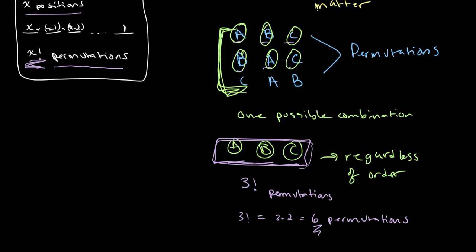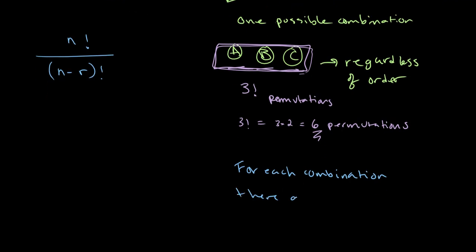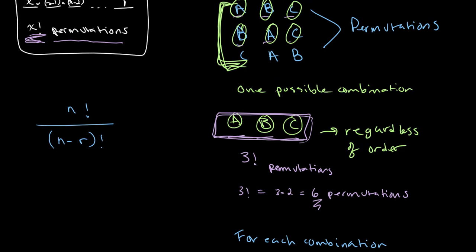let's rewrite our equation for permutations, we have N factorial divided by N minus R factorial, so these are the total number of permutations. Now, for each combination, there are R factorial permutations. So as I just stated here, for the combination of people A, B, and C sitting, there are three factorial, where three is equal to R, so three is equal to the value of R, different permutations. So therefore, if we want to solve for the number of combinations in terms of this equation, then we can divide this by R factorial.